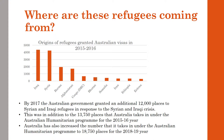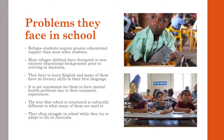By 2017, the Australian government granted an additional 12,000 places to Syrian and Iraqi refugees in response to the Syrian and Iraqi crisis. This was in addition to the 13,750 places that Australia takes in under the Australian Humanitarian Program. Australia has also increased the number it takes in under the Australian Humanitarian Program to 18,750 places for the 2018-19 year.